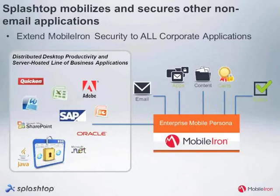That covers what Splashtop has done. On the right-hand side you can see MobileLion with our email, apps, content, and all the certificates and policies set on the device. Using the Splashtop AppConnect-enabled app, we can give you access to even more content. Splashtop will walk you through what they've done to make all this other content and data available on the device more thoroughly and more securely. And with that, I'll hand it over to Jeff.